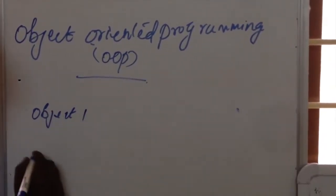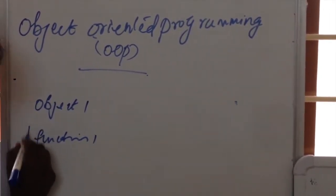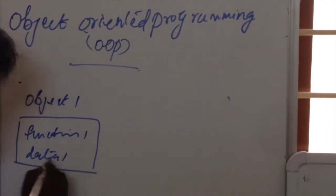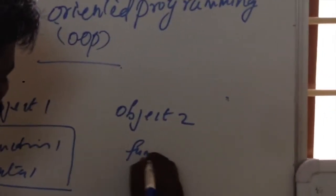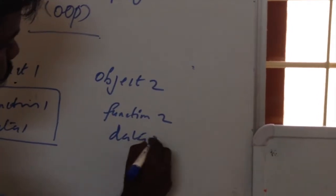In one object, we have some functions and some data. In another object, we have another function and another data.